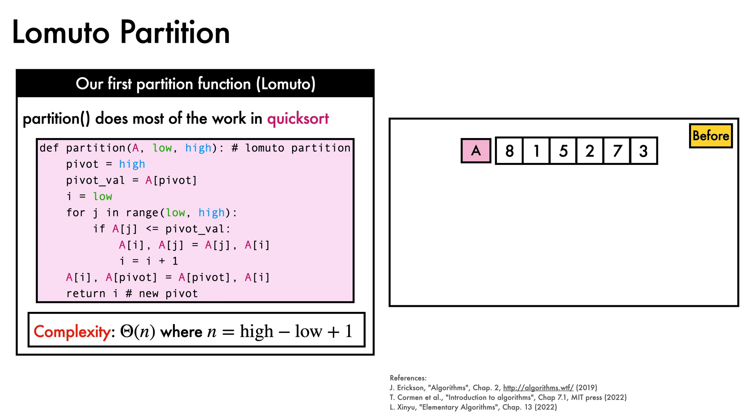We'll see it in action on an example array, which we duplicate for clarity. After calling the function with low set to index 0, and high set to index 5, we assign the pivot to be index 5, and assign its value, which here is 3, to pivotVal. Then, we initialize i to low, and begin a for loop with j over the elements of the array, up to, but not including, high.